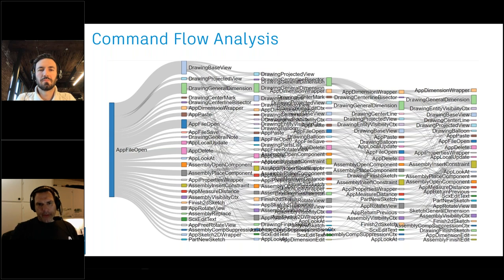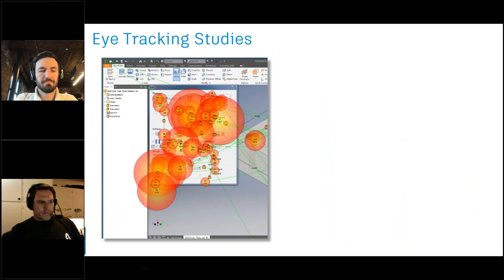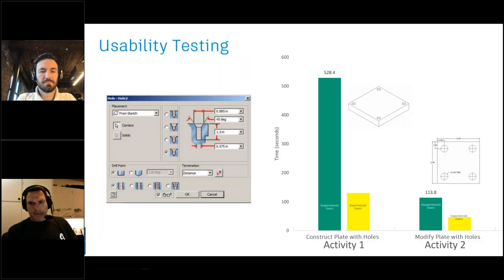When we look at improving a command or workflow, we examine this command flow to see if users jump back and forth a lot. The hole command was a good example — that's one reason we moved it to the modern panel architecture. We found people were going in and out of the hole command a lot before completing it, going back and forth between sketching and various tools. We also did an eye-tracking study with the legacy hole command.